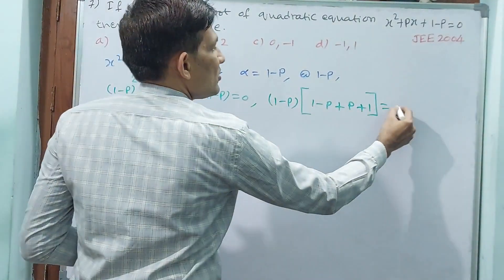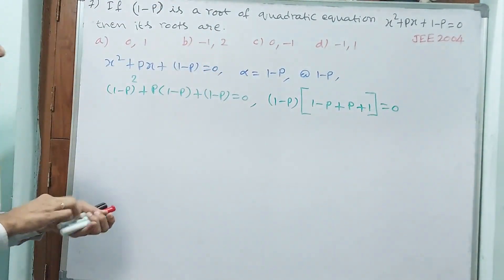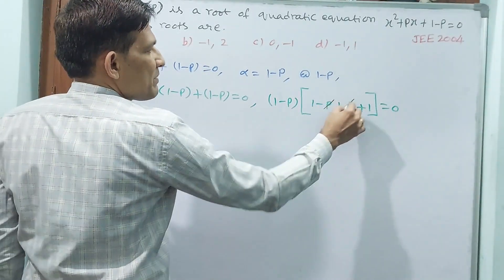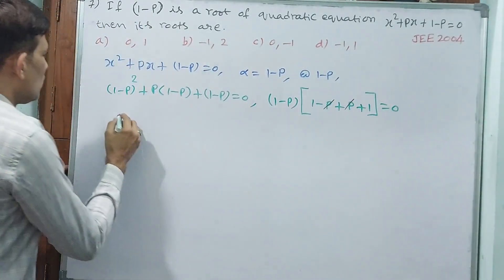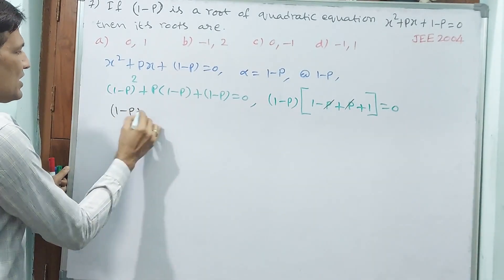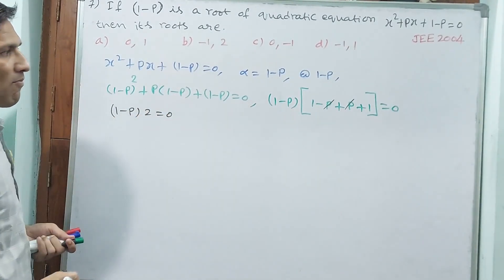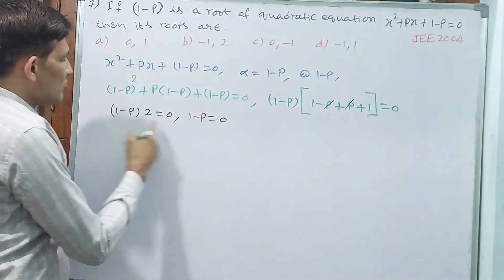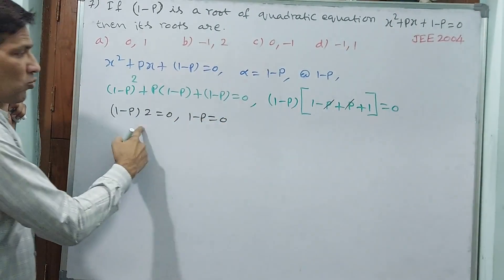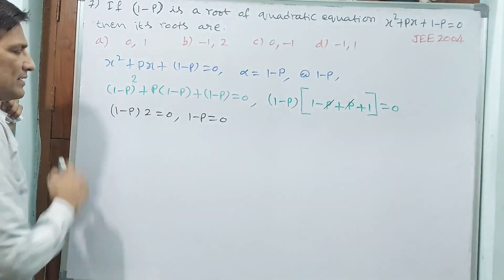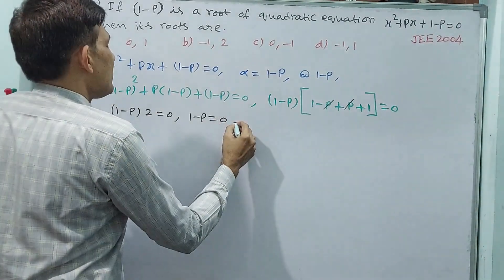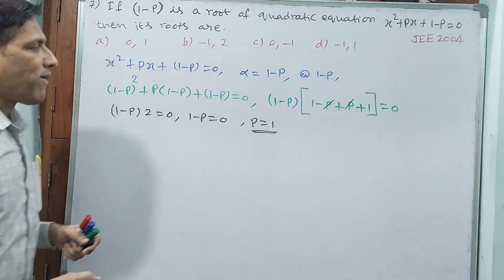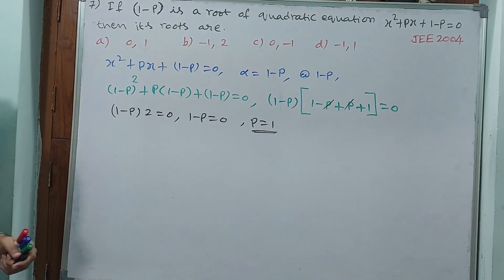Simplifying inside the bracket: -p + p cancels, leaving 1+1 = 2. So (1-p) × 2 = 0, which gives (1-p) = 0, since 2 cannot equal zero. Therefore p = 1.